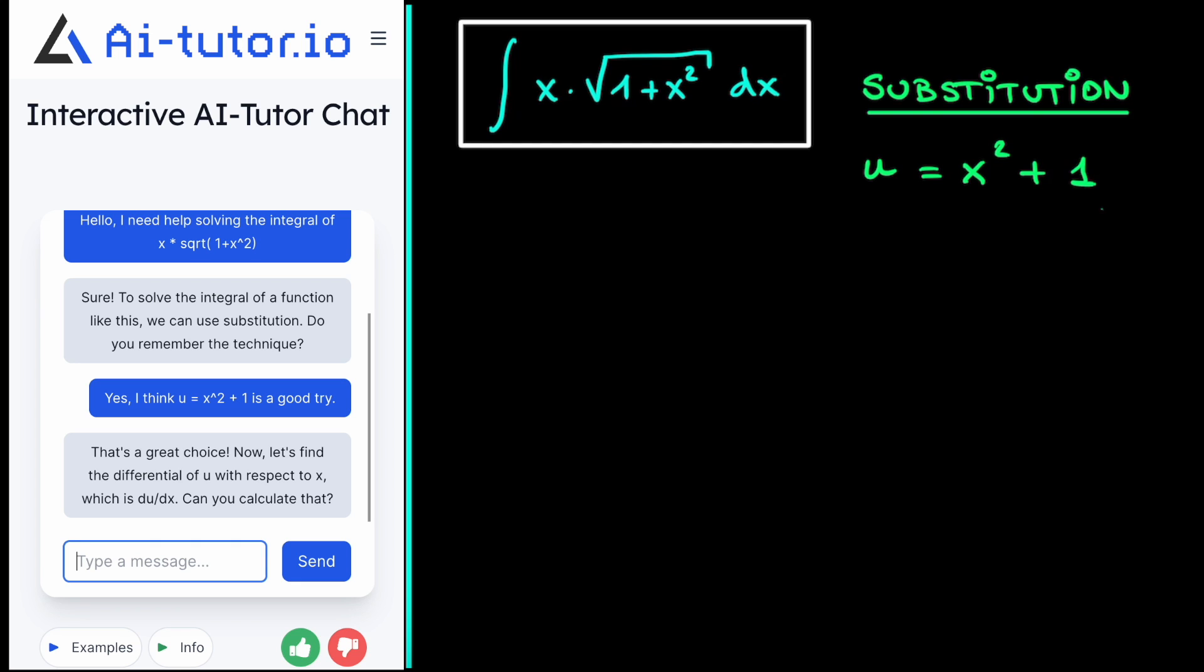Now, let's find the differential of u with respect to x, which is du over dx. And we know that this is indeed the step that we need to do in substitution, because we still need to get rid of this dx in our integral. In fact, we need to rewrite dx as a function of du. And to do this, we will differentiate our u with respect to x.